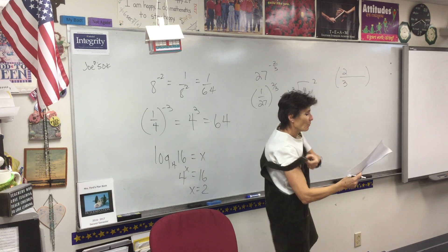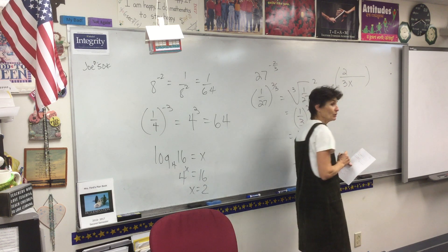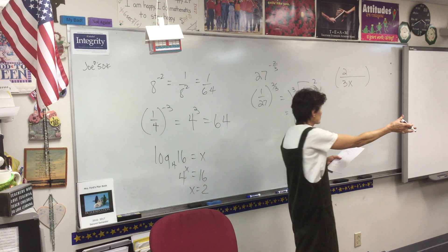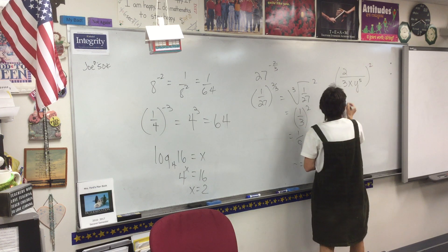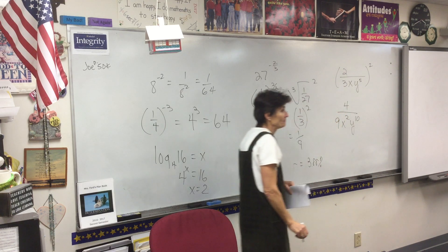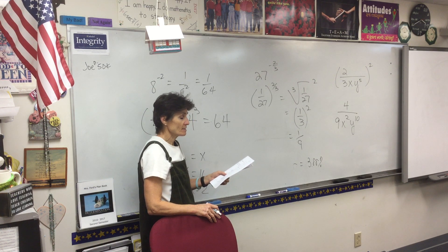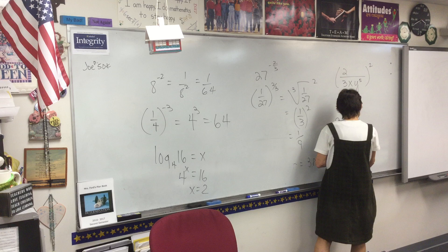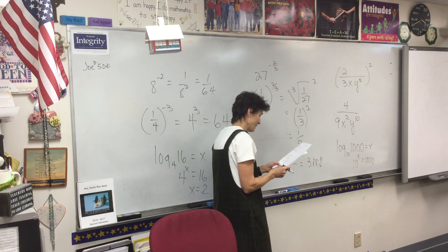What happens to the x's? One on the bottom. See those four y's — they're coming down, so we have y to the 5th on the bottom, then square it: we get 4 ninths over x squared times y to the 10th. G is 9, H is 3. Log base 10 of 1,000: 10 to what power is 1,000? If you said 3, you are right.